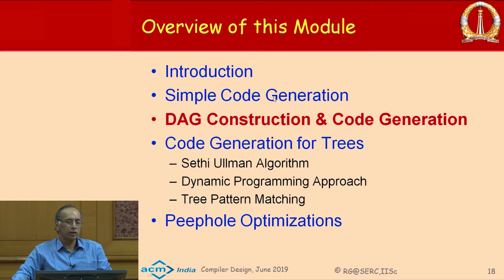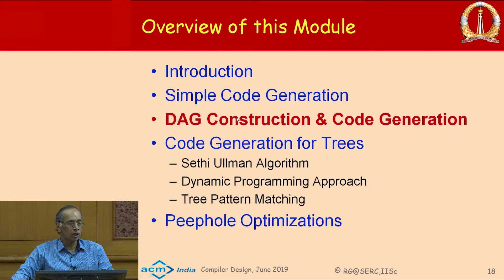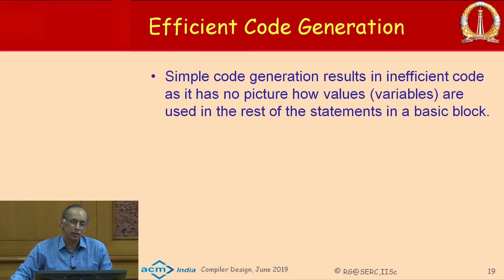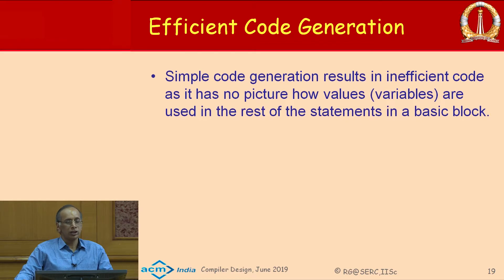In the morning we saw a simple code generation scheme. What we are going to see now is a more sophisticated code generation scheme, by constructing the directed acyclic graph for a basic block and then generating code from that. The reason why the simple code generator was not efficient is that it has no big picture.